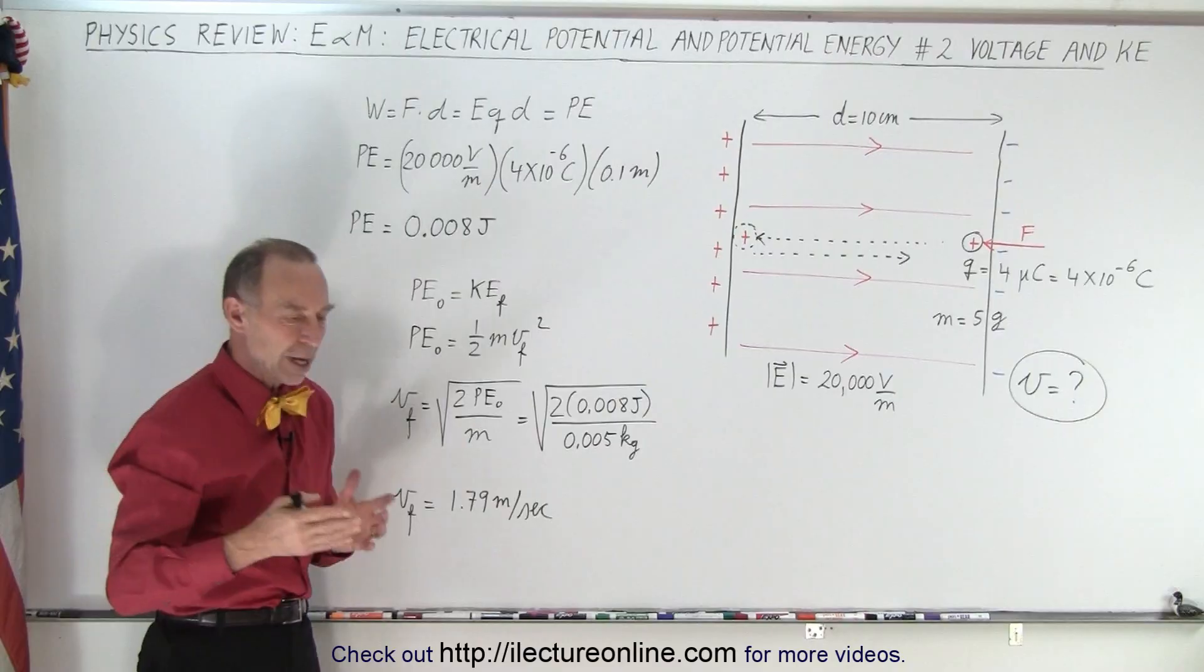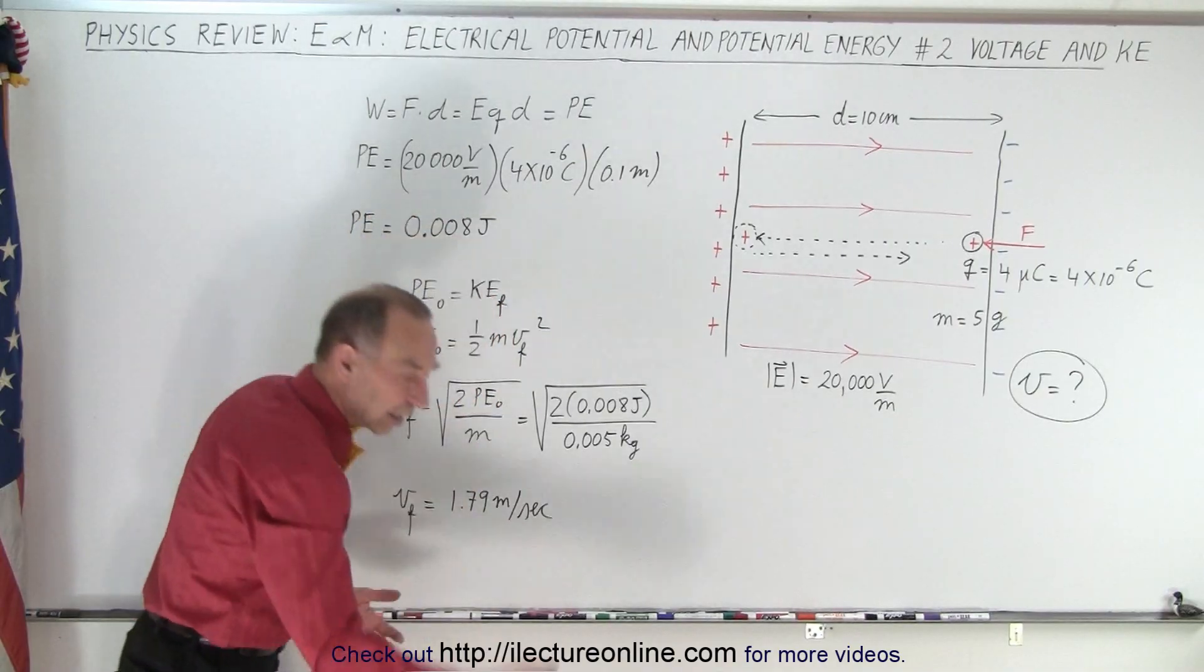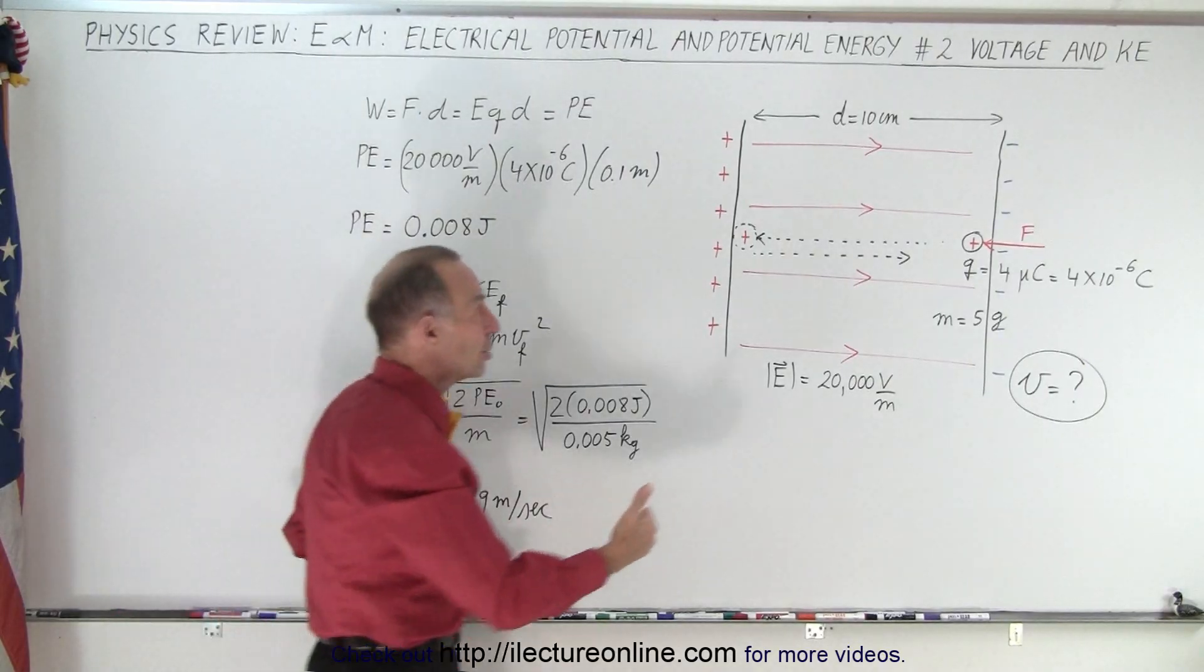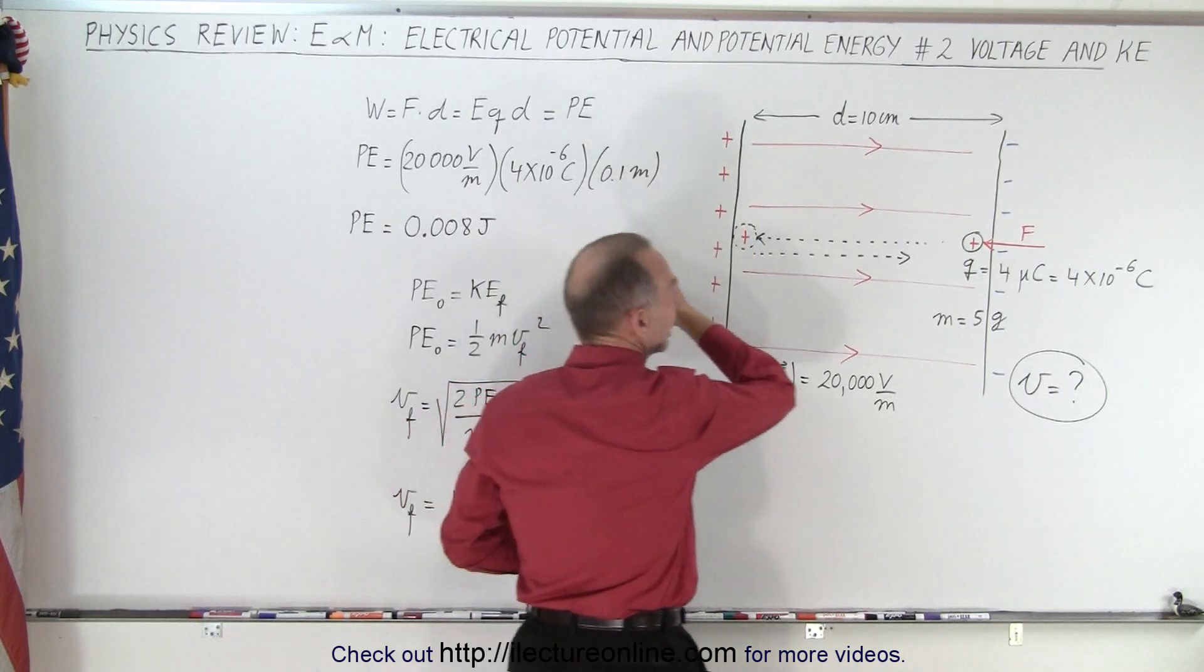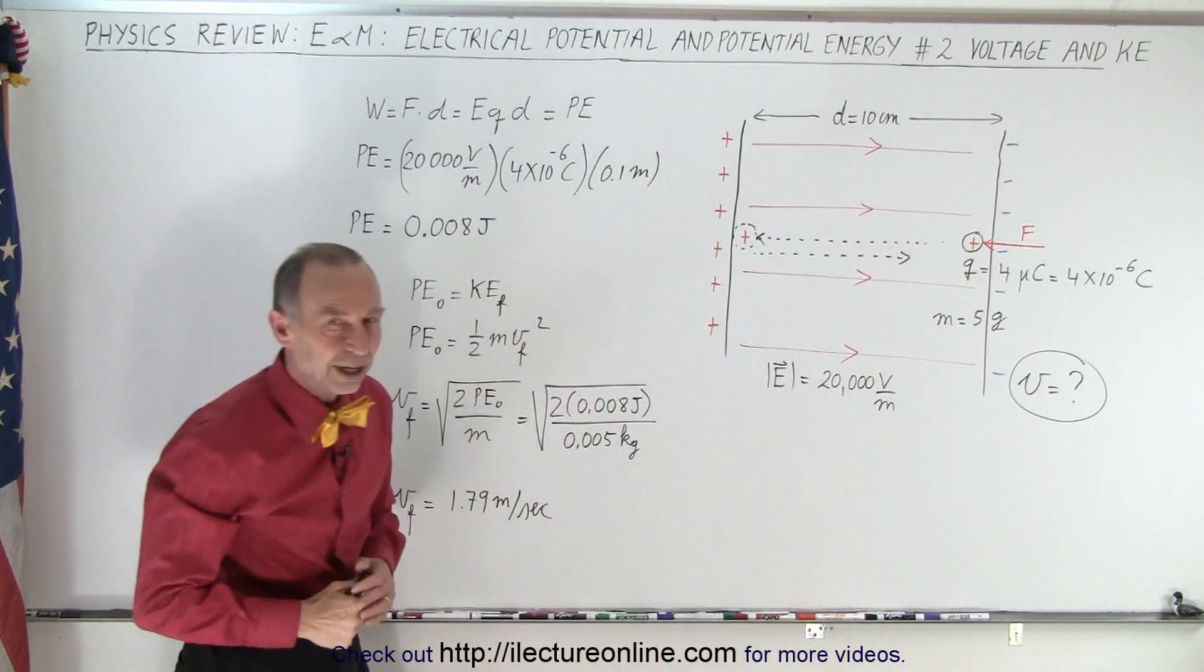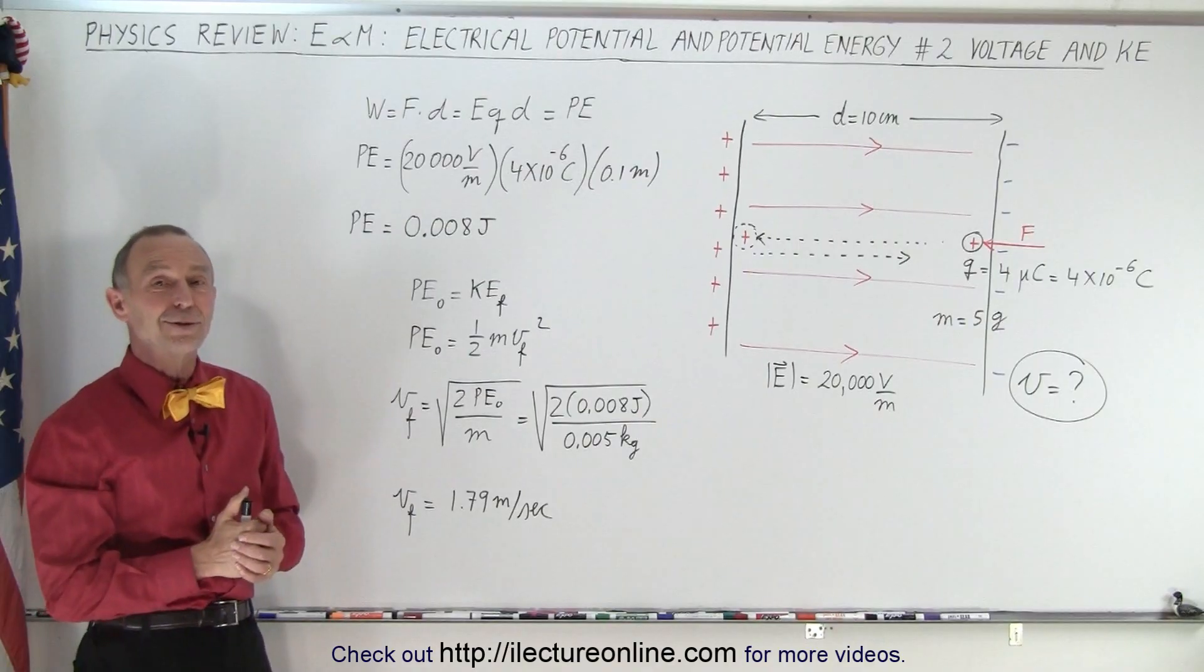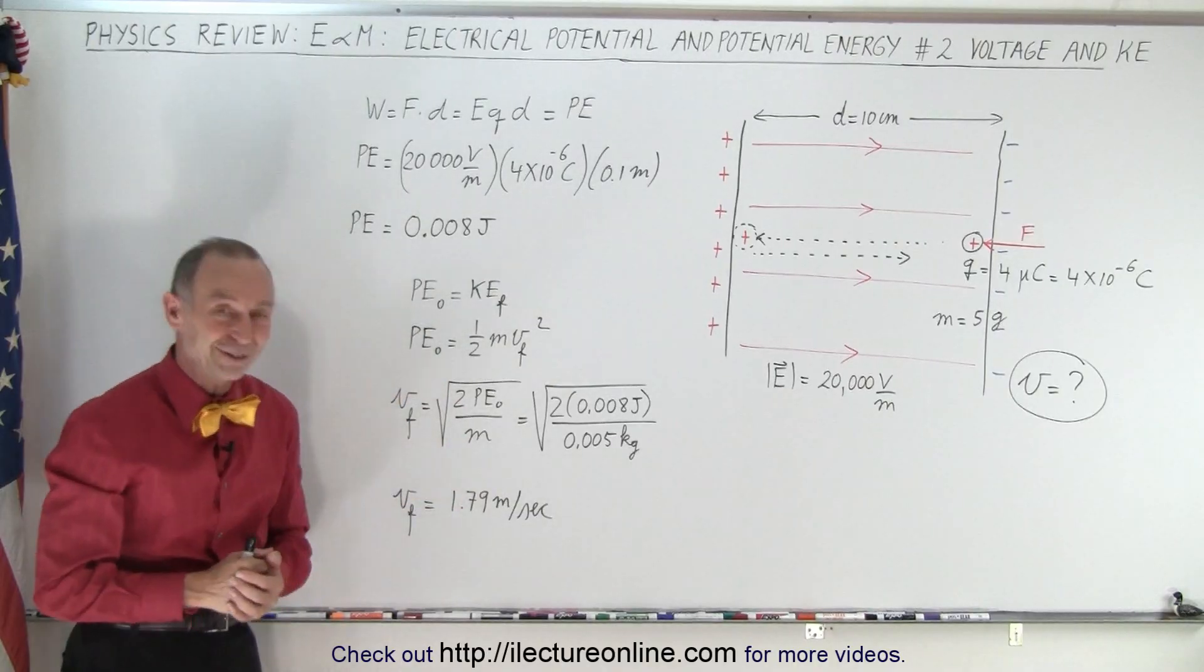So that is the connection between gravity, the gravitational potential energy, and the kinetic energy you get from an object falling back to the ground. Here you give it electrical potential energy by pushing it to the other side, you let go, it then gains kinetic energy and gains speed as it goes to the other side. The connection is right there, and that is how it's done using not the gravitational, but the electrical potential energy.